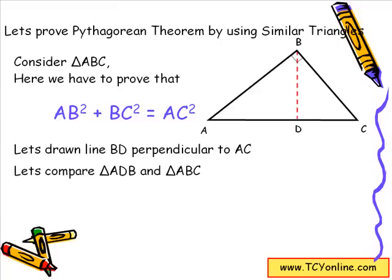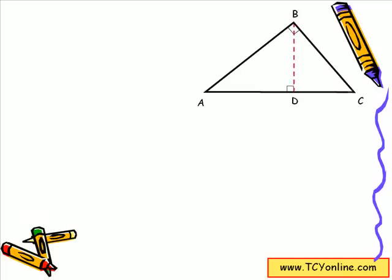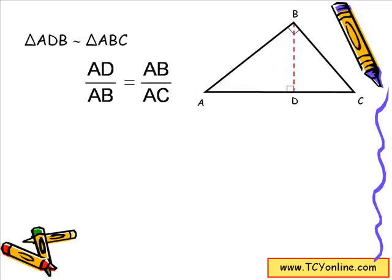Now considering triangles ADB and ABC, we find that angle A equals angle A. Also, angle ADB equals angle ABC because both have a measure of 90 degrees. So we can see that triangle ADB is similar to triangle ABC. After proving this similarity, we know that AD/AB = AB/AC, and from here, by cross multiplication, AB² = AD × AC.